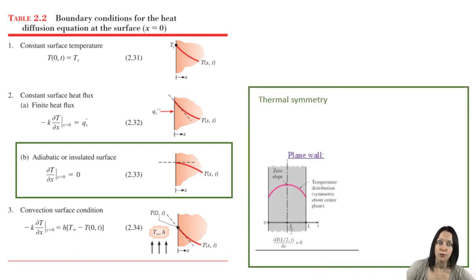Let's take the case of thermal symmetry in a plain wall. And when we say plain wall, we're indicating that the heat transfer is one-dimensional within that plain wall. In other words, the temperature gradient, the temperature change, is only significant in one direction.